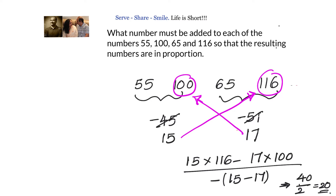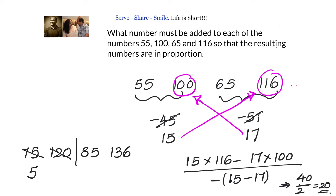Adding 20 gives 75, 120, 85, and 136. Checking the ratios: 75/120 = 5/8 and 85/136 = 5/8. Both ratios are equal at 5:8, confirming x = 20 is correct.